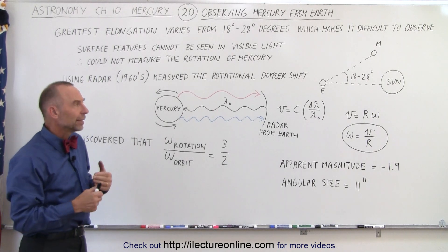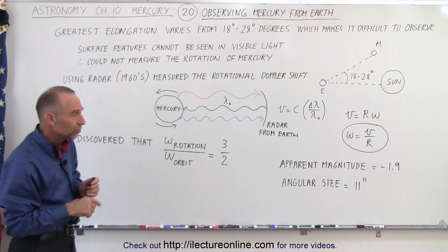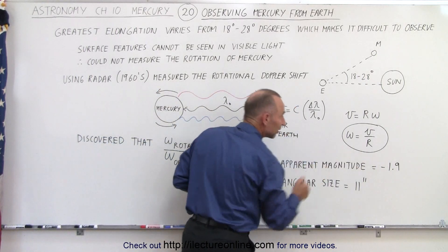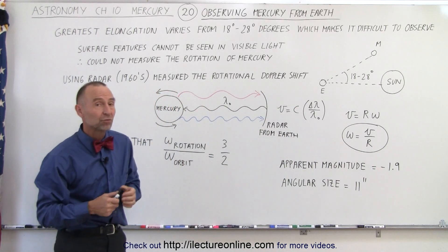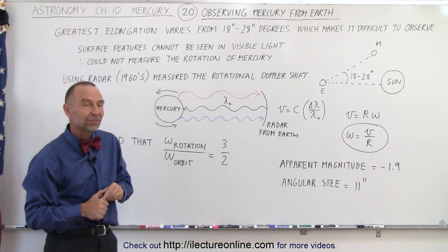In addition to that, even though it is hard to see the planet because it's so close to the Sun, the apparent magnitude is still quite significant, at minus 1.9, which makes it almost twice as bright as the brightest star in the sky, Sirius.